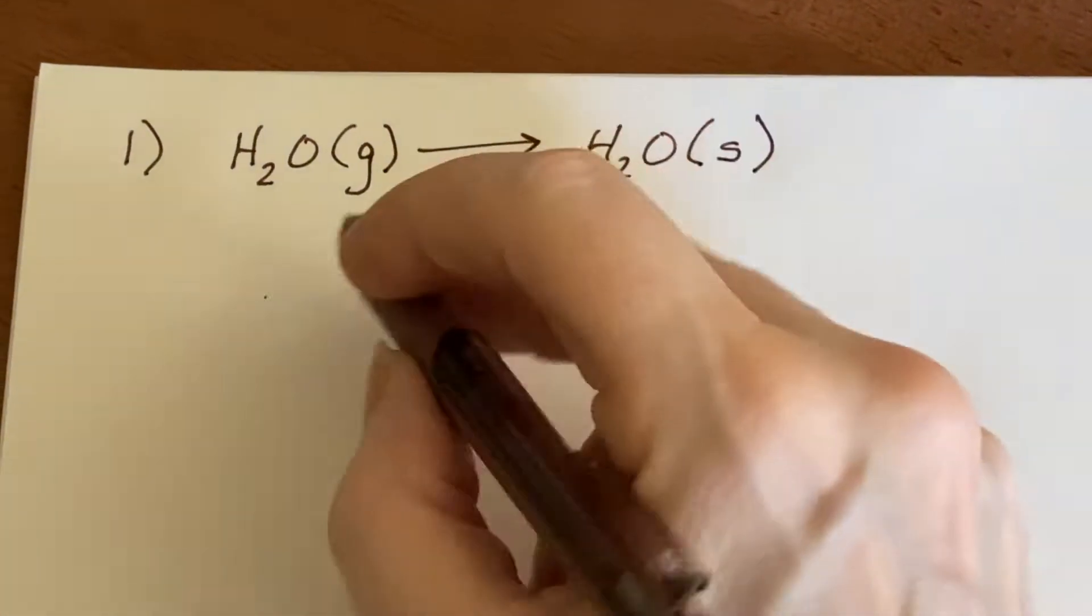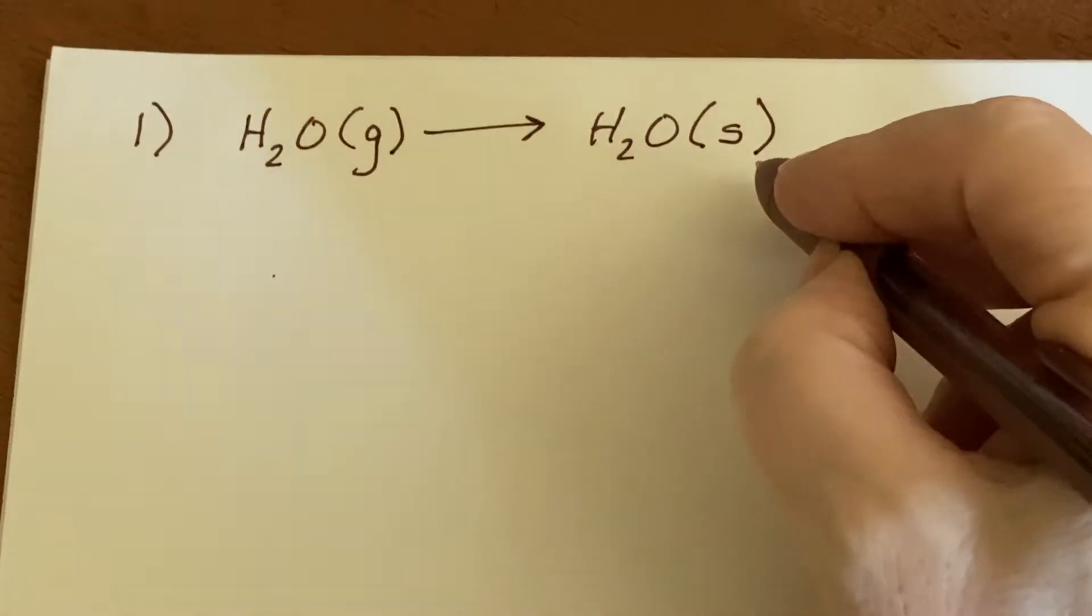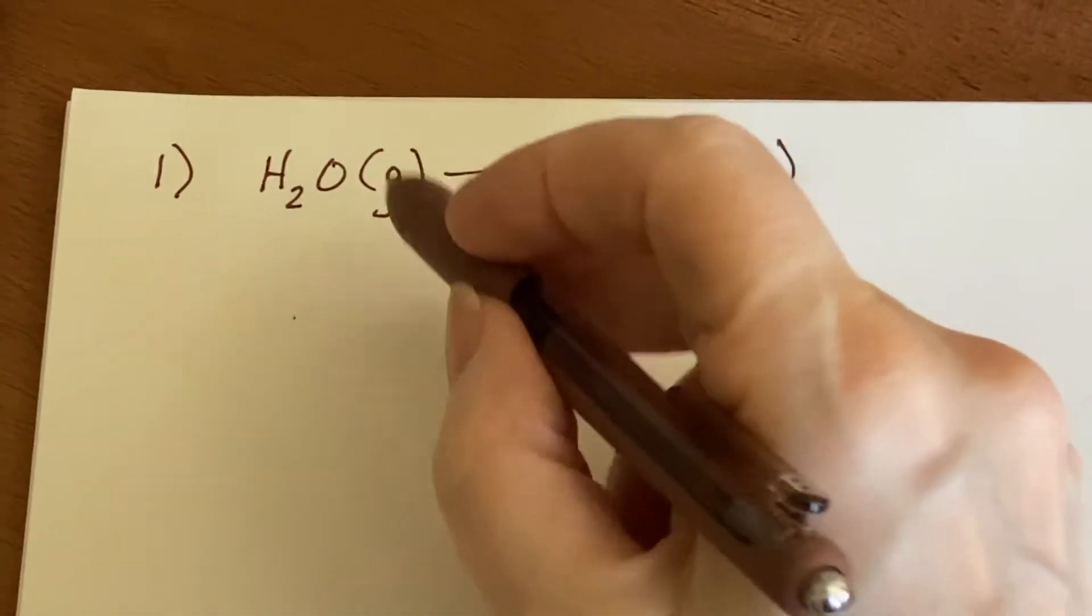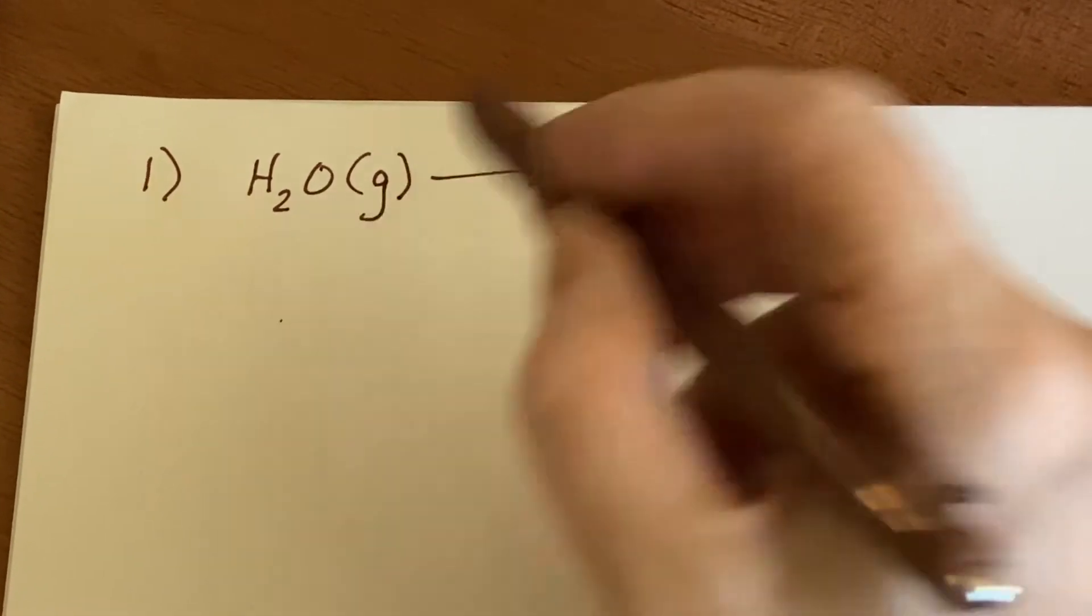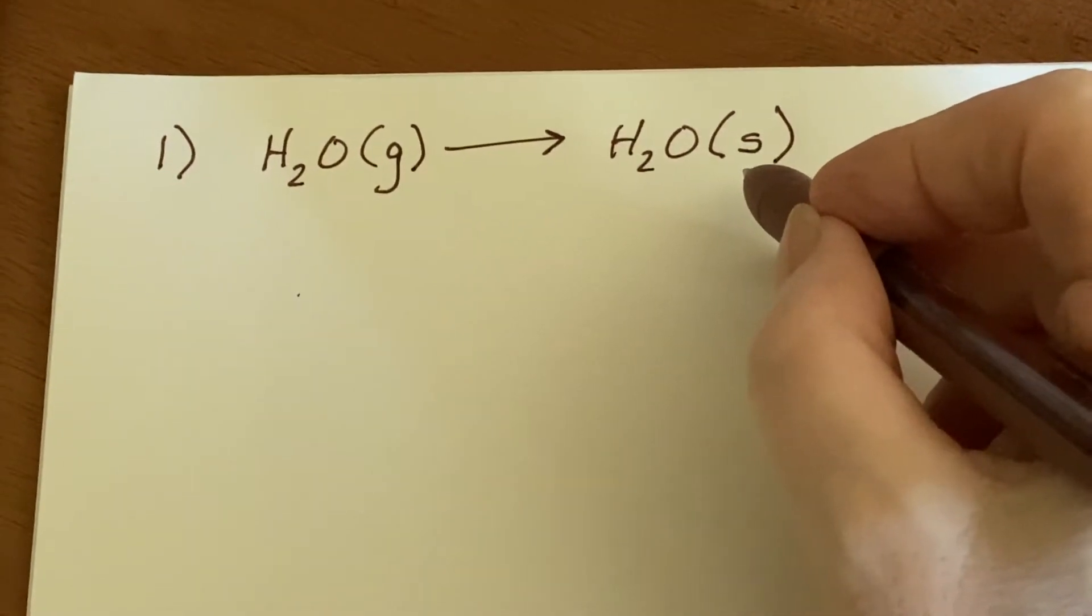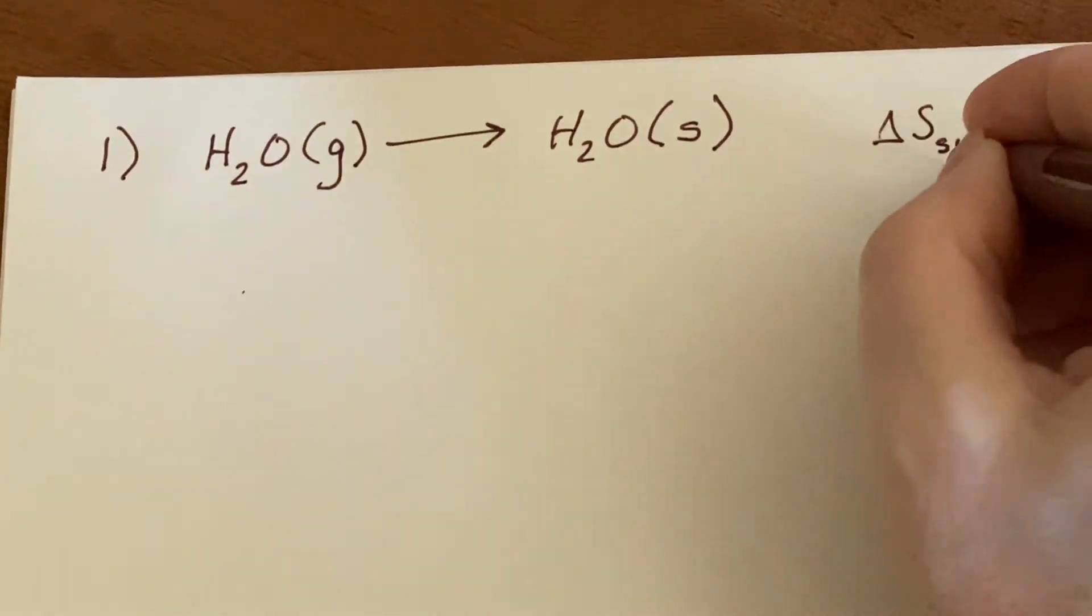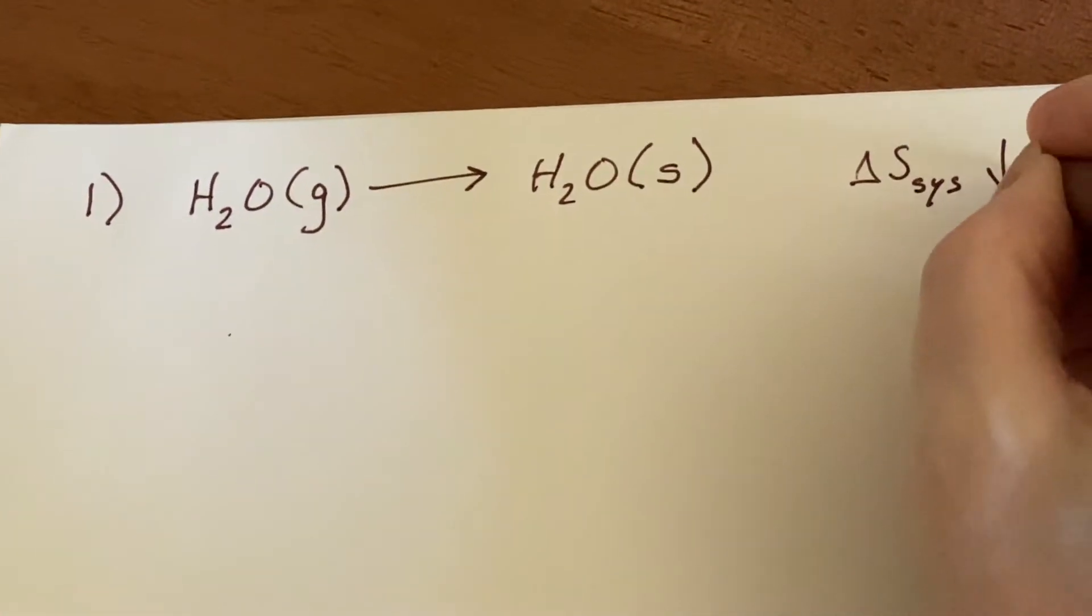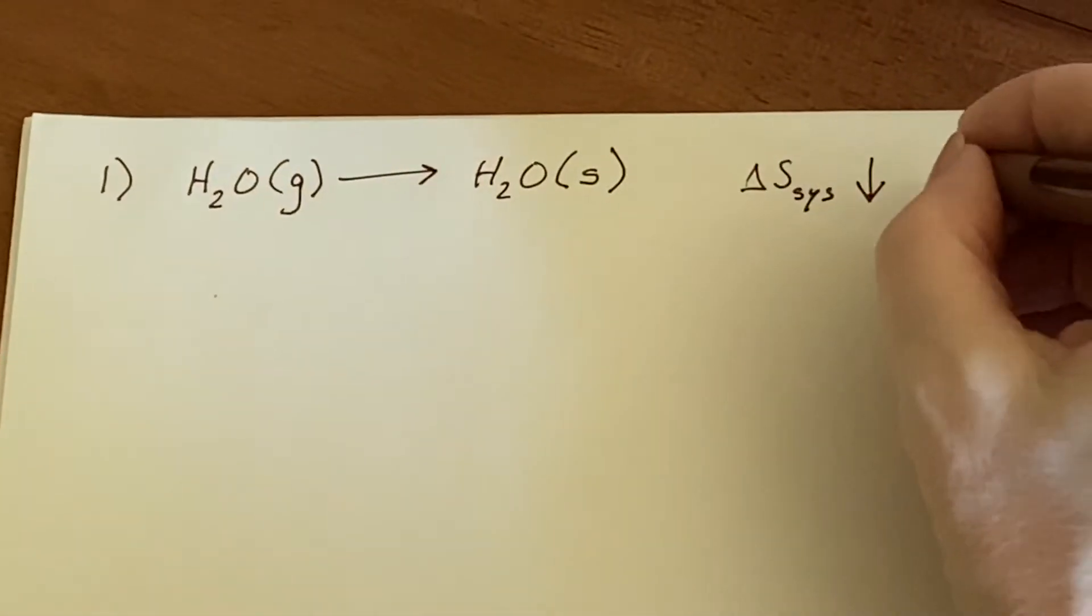And in this case, it very clearly means that something that was a gas and free to move around is now on the window pane and not moving around at all. So the Delta S of the system must have gone down. It's a negative.